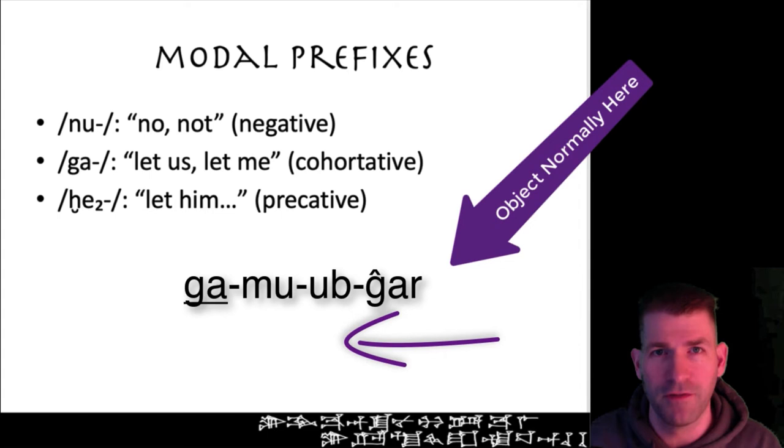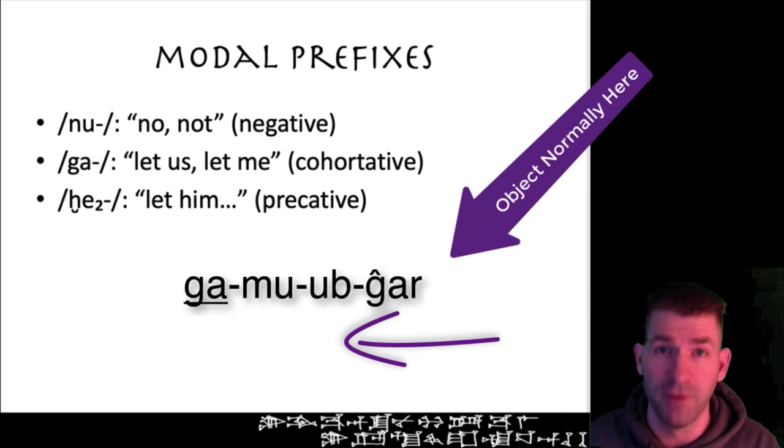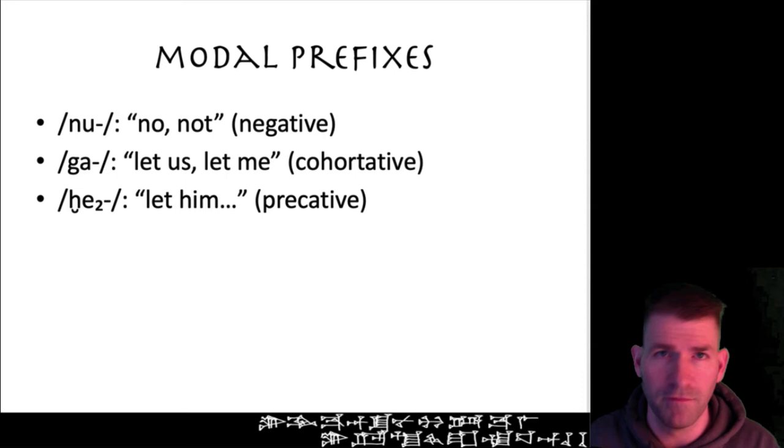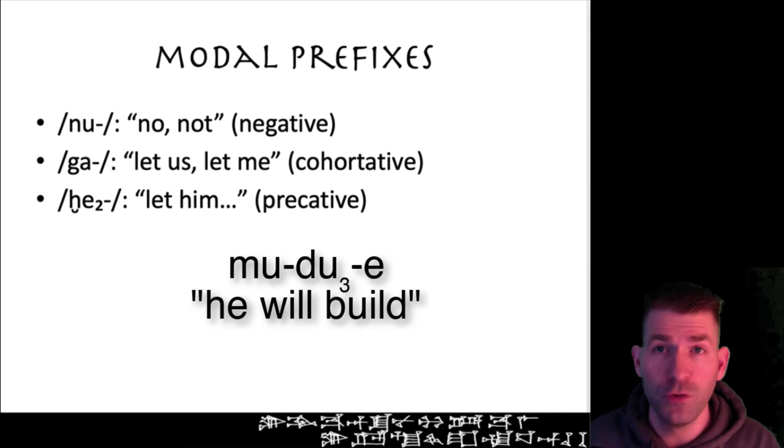The final prefix that we will investigate in this chapter is the precative, which for now is to be translated 'let him, her, or it' or 'may he, she, or it do something.' Thus, if mu-du₃-e means 'he will build,' then ḫe₂-mu-du₃-e would be 'let him build.'